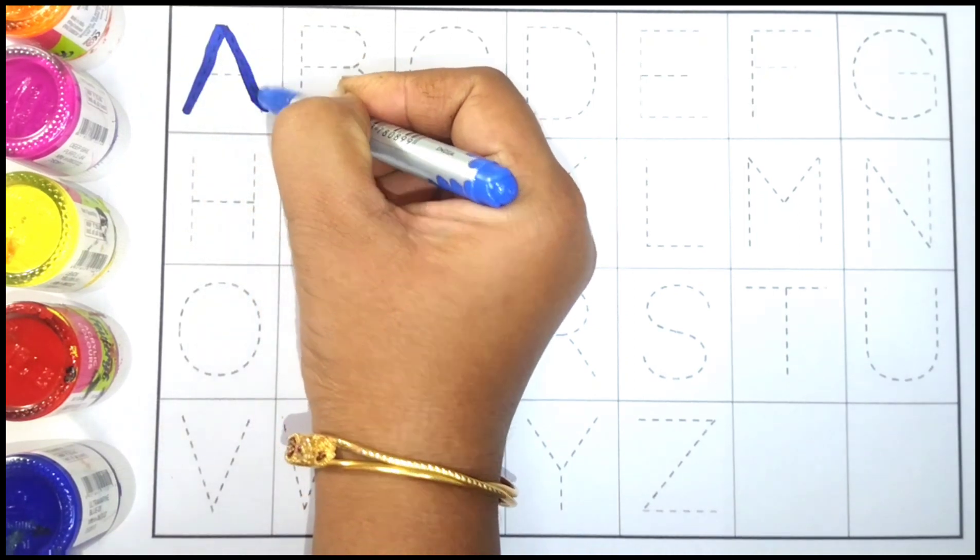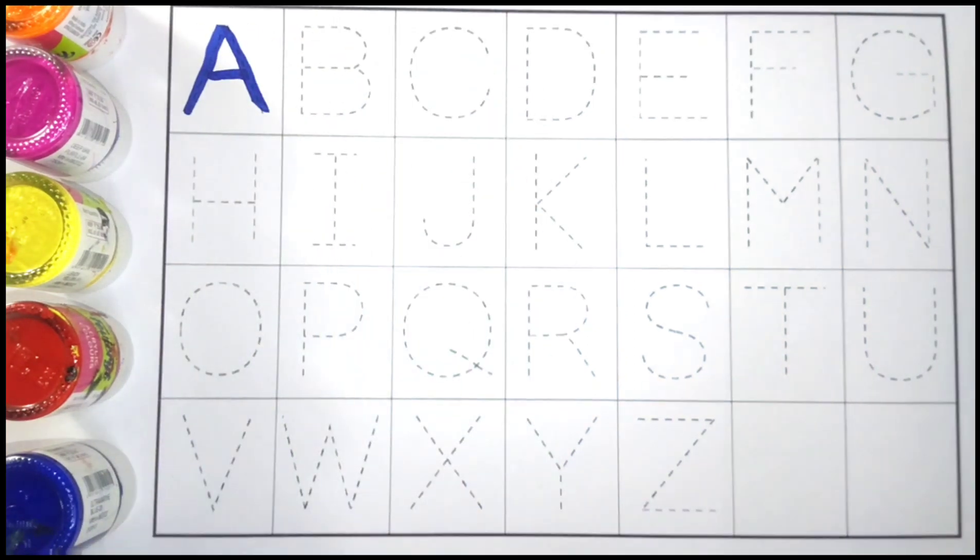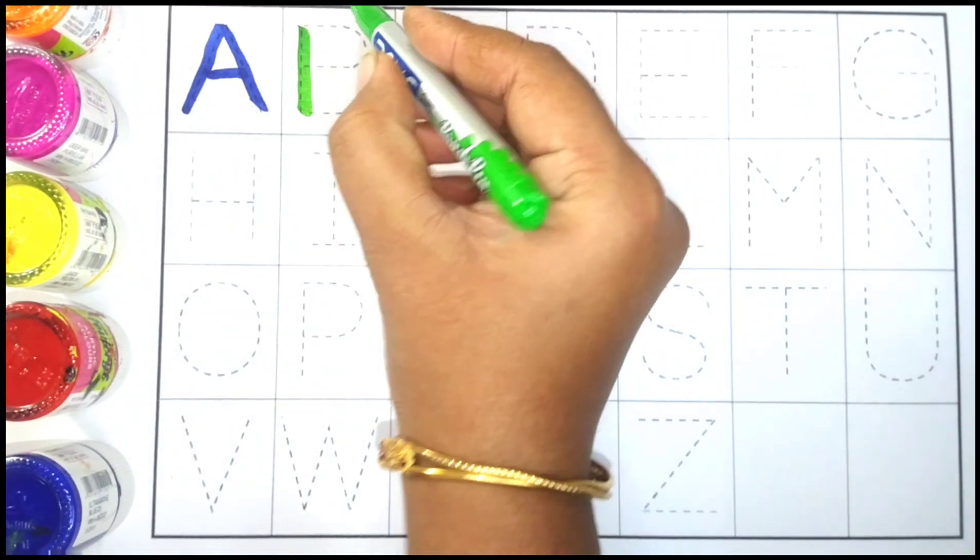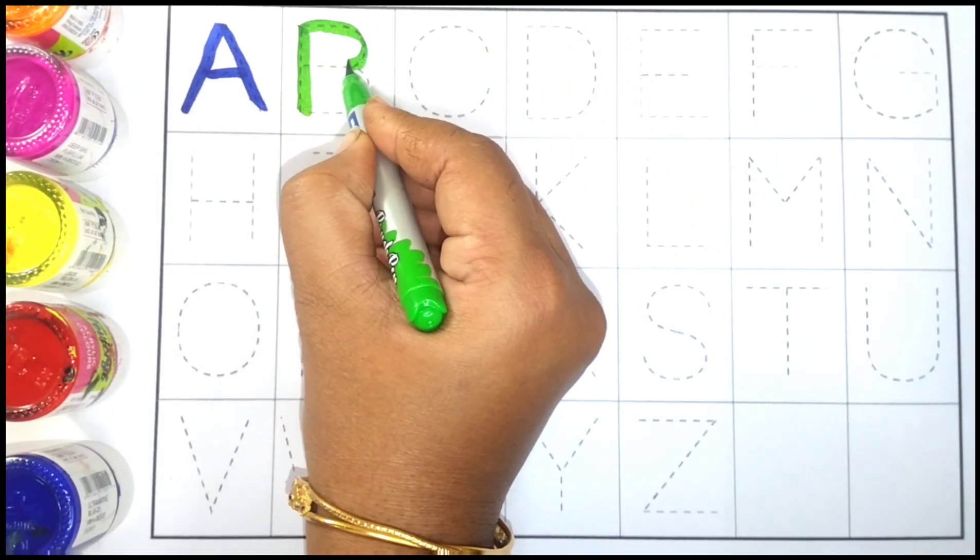A for Aeroplane. Green color. B for Banana.